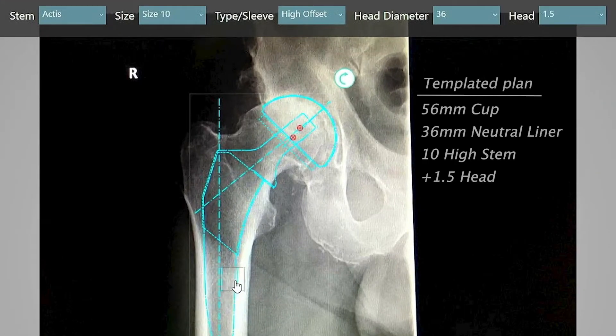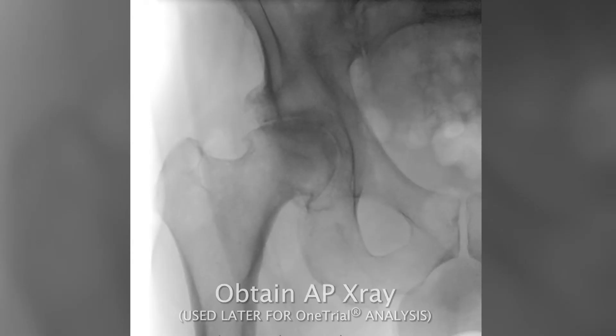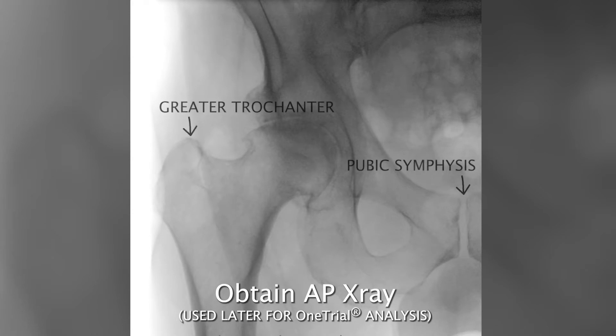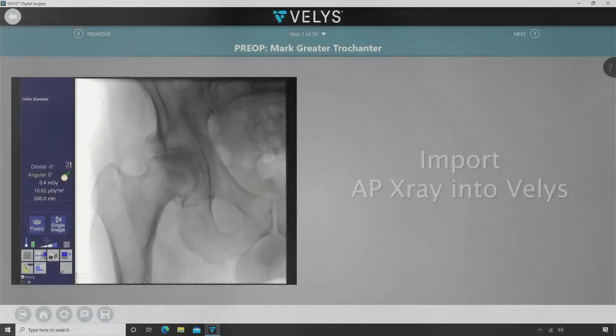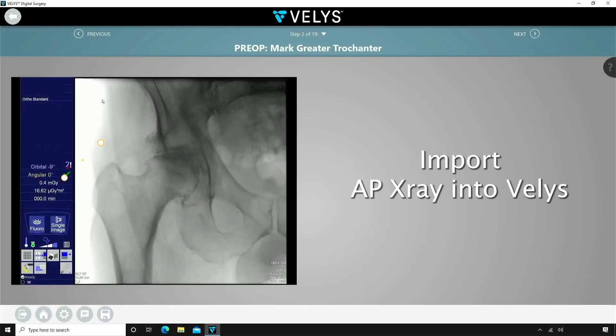I'm wanting to lengthen this patient 4 to 5 millimeters. Before cutting the femur you need to obtain an image of the proximal femur with the pubic symphysis and a greater trochanter in the image. This image is referenced later for the one trial analysis.